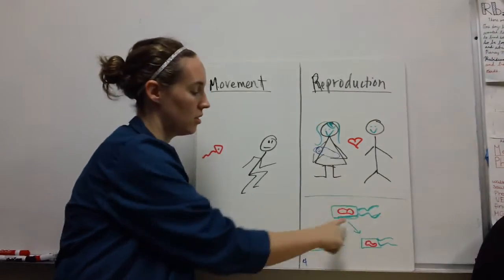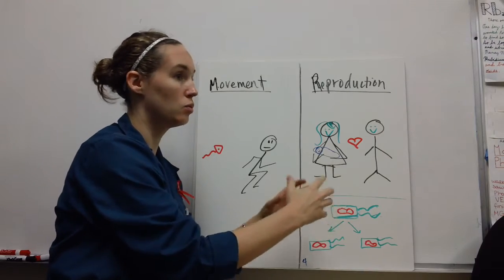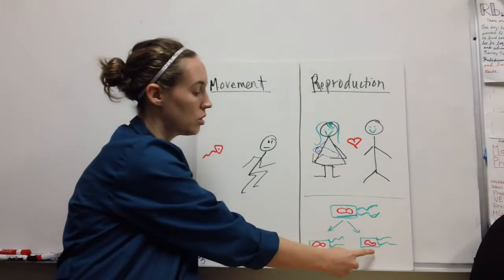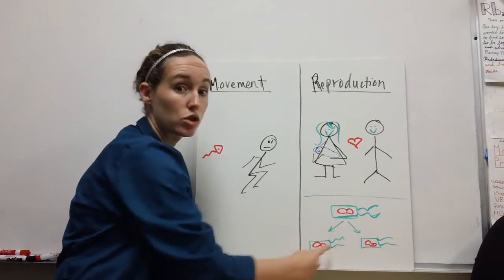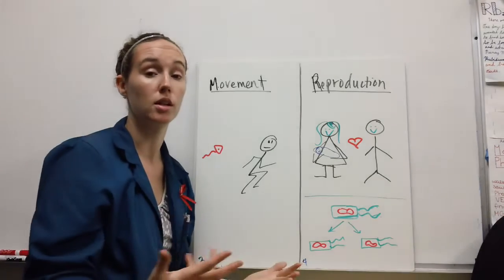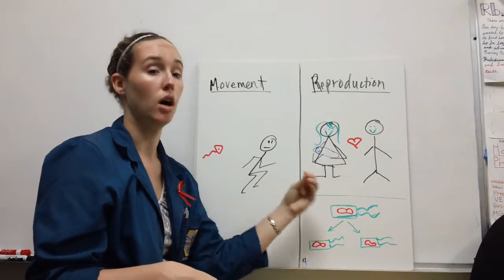In asexual reproduction, you take one cell and replicate its DNA, then divide it in two so you have two cells just like the original. Sexual or asexual reproduction, but an organism has to be able to reproduce on its own.